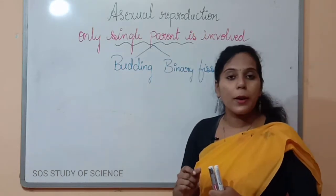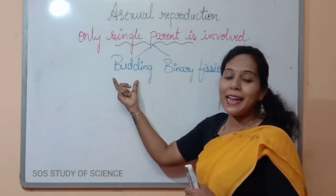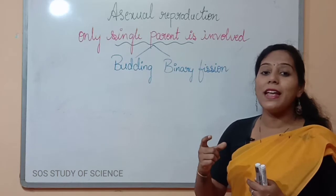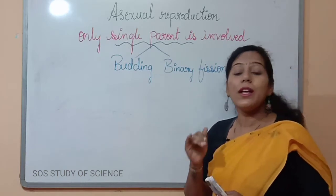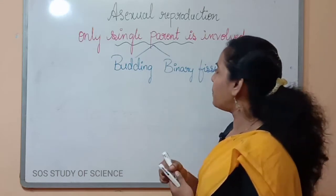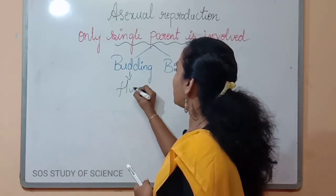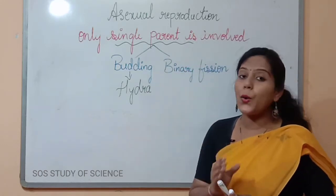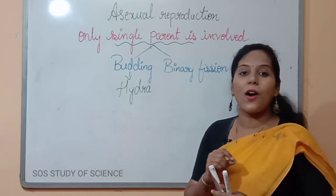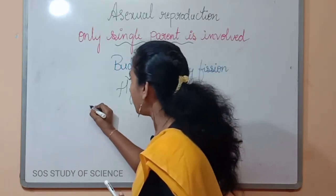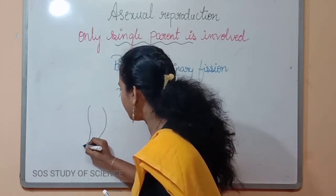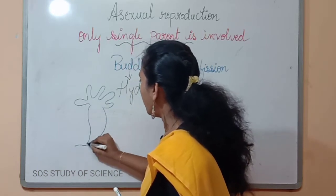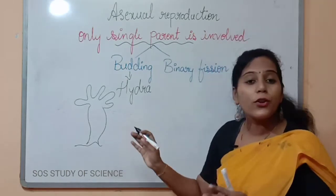Under asexual reproduction, we are going to mainly focus on budding and binary fission. What is meant by budding? We have seen budding in yeast in previous classes. In this class, we are going to mainly focus on budding in the hydra. Hydra is a microscopic organism. I just roughly draw it here — this is a rough picture of hydra.